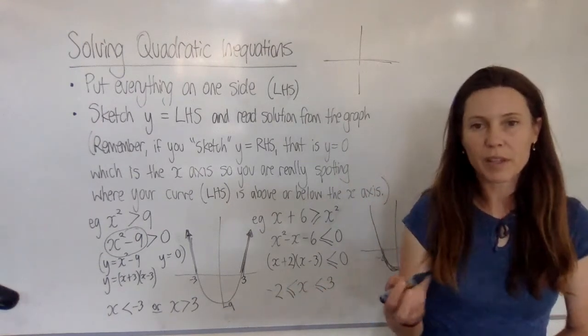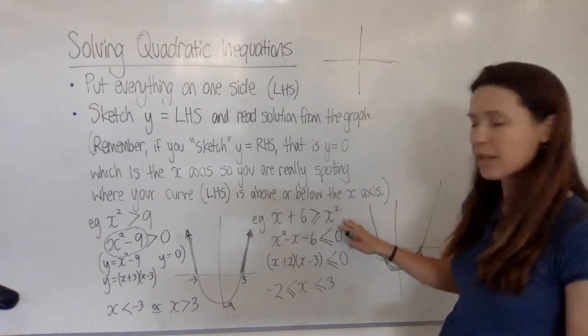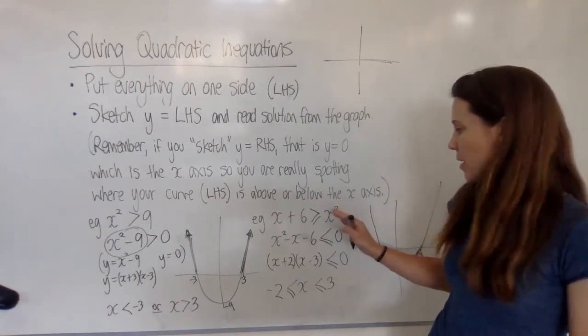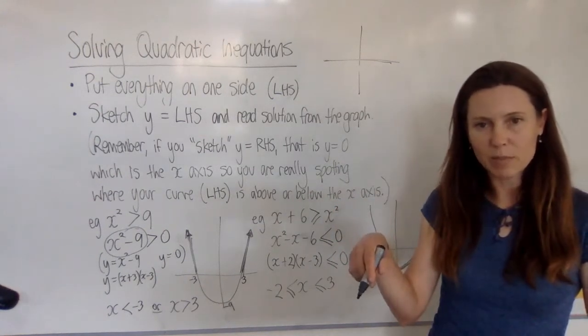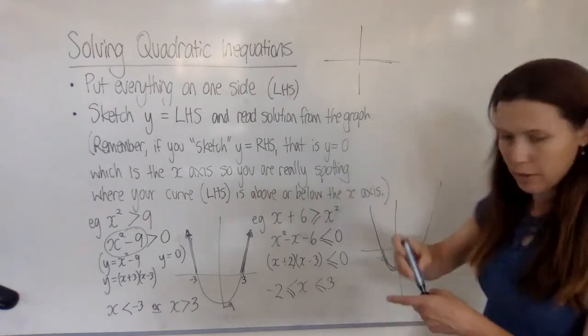Now you might be thinking, what would have happened if I brought everything onto this side and factorized it the other way round? Wouldn't I have had an upside-down parabola? I would have. Let's grab another colour.